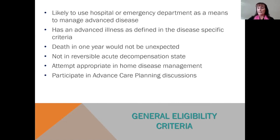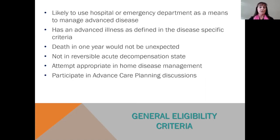One thing discussed with a progressive serious illness is that it wouldn't be unlikely if death were to occur within the next year of life due to disease progression. But if you go past that year, you can still remain on the palliative program. We also look at irreversible acute decompensation — when bodily systems have started to change in ways that cannot be repaired, indicating progression of disease.